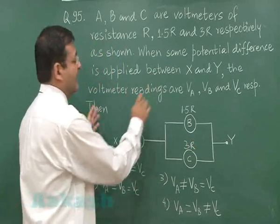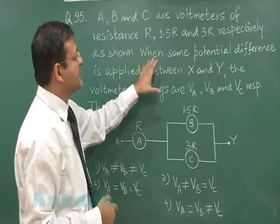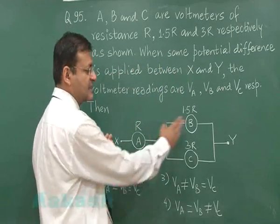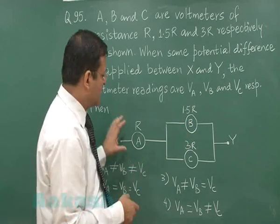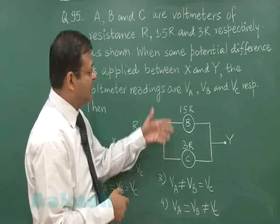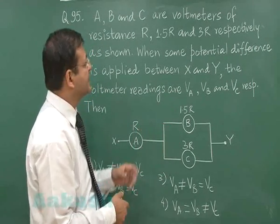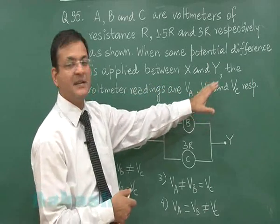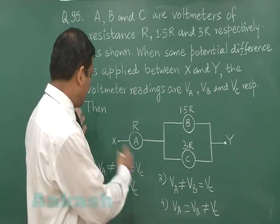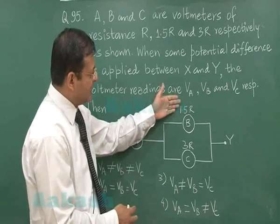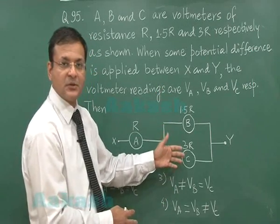Now when some potential difference is applied between point X and point Y, naturally the current will start flowing and potential difference will be created. What is demanded is: the voltmeter readings are VA, VB, and VC respectively. Then you have to choose from these options.